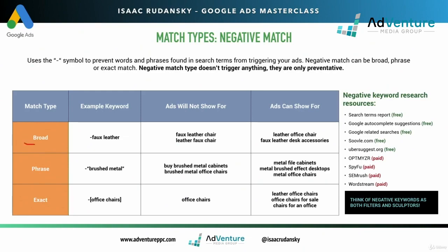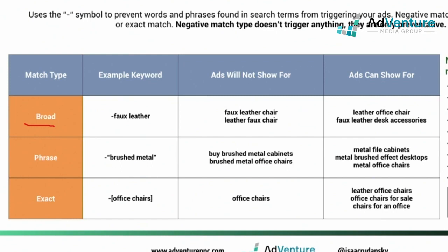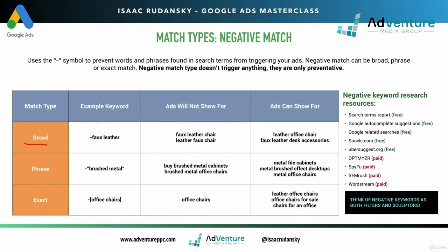First, we'll take a look at a broad match example. Broad match is just the negative sign and the keyword. In the same way that broad match positive keywords include the most potential search terms, negative broad excludes the most potential search terms. For example, when I use negative faux leather, I'm telling Google that anytime faux leather shows up in a search term, don't trigger my ad. So ads will not show for faux leather chairs or leather faux chairs, but ads can show for leather office chair or faux leather desk accessories.